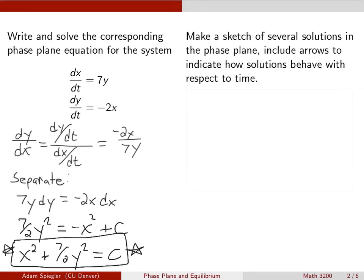So that would be our phase plane solution. And if we want to graph this, which is the next part, then this almost looks like a circle, except we have that 7 halves in front of the y squared, and that's going to make this an ellipse. So each of these graphs in the phase plane should be an ellipse, and for each value of c, we're going to get a different ellipse.